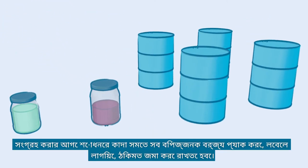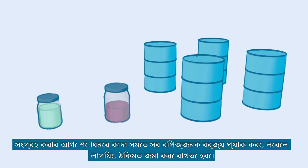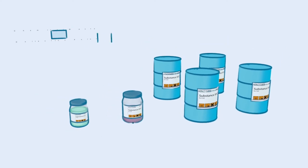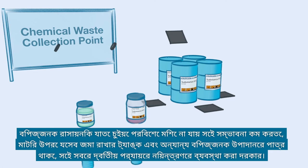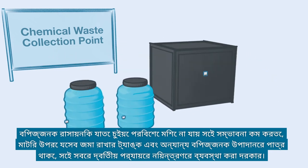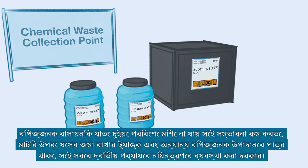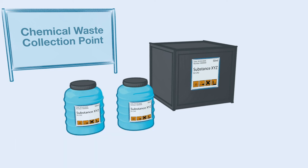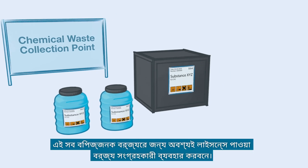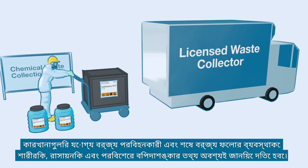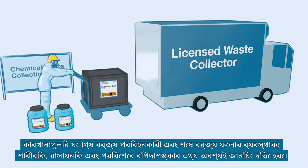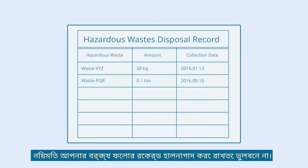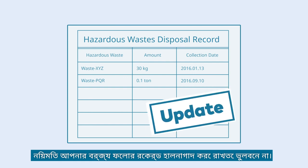All hazardous waste, including the treatment sludge, should be packed, labeled, and stored properly before collection. Secondary containment should be provided for all above-ground storage tanks and other hazardous material containers, in order to minimize the chance of hazardous chemicals leaching into the environment. Be sure to use licensed waste collectors for these hazardous wastes. Factories must provide physical, chemical, and environmental hazard information to their qualified waste transporters and the final waste disposal facility. Do not forget to regularly update your waste disposal records.